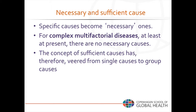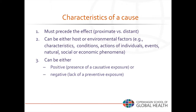What are the key characteristics of a cause? A cause must precede the effect — it has to come before. A cause can be a host, an environmental, or a biological factor. You should have all those factors in mind: characteristics, conditions, actions of individuals, events, natural events, social or economic phenomena, biological events, etc. It's also important to point out that a cause can be either positive — where the presence of the causative exposure leads to disease — or negative, meaning the lack of a preventive exposure.